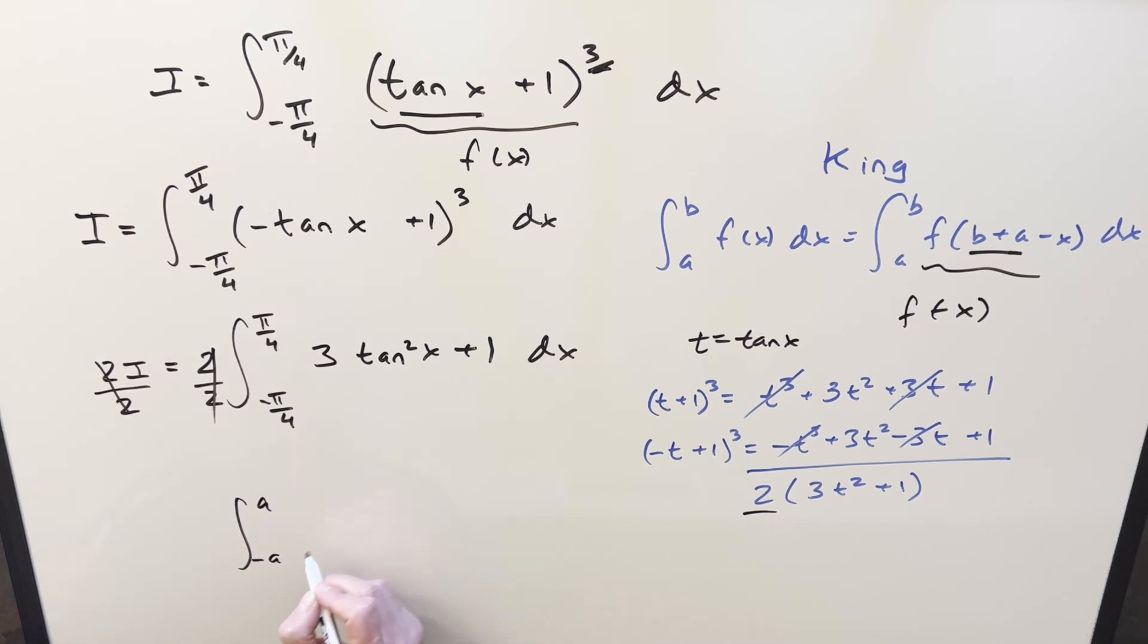If we have this and f of x is even, we can bring a 2 out front and reduce the lower bound to 0 like this. So using this, we'll turn this to a 0, bring the 2 out front.